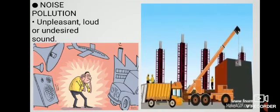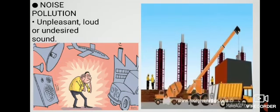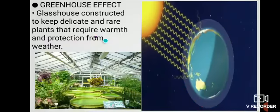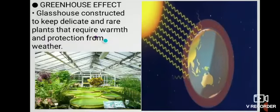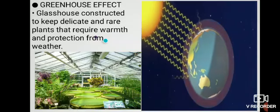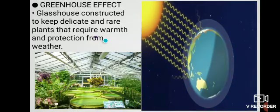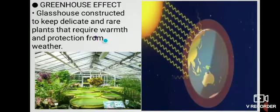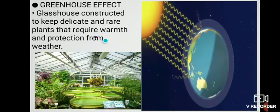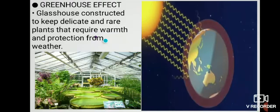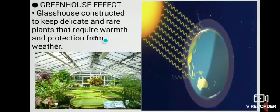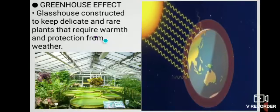Now moving forward to greenhouse effect. What is greenhouse effect? The greenhouse effect is a process that occurs when gases in Earth's atmosphere trap the sun's heat. This process makes Earth much warmer than it would be without an atmosphere. Here you can see in this GIF also. Now the greenhouse effect is one of the things that makes Earth a comfortable place to live.